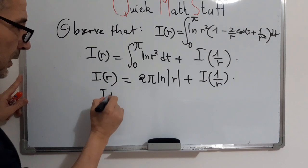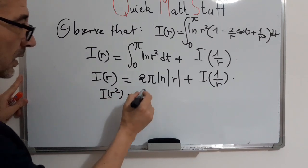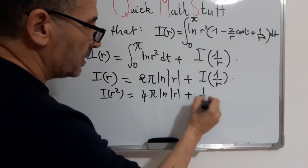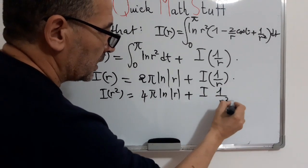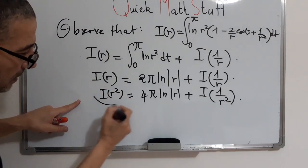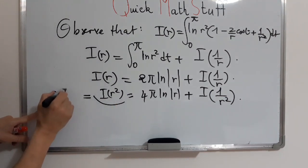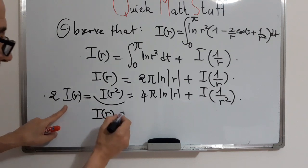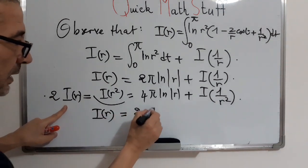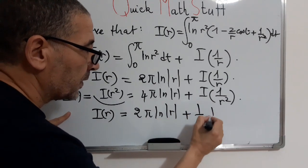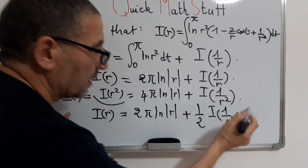We apply this relation to r squared. We have 4π ln of r plus I of 1 over r squared. But don't forget that this equals 2 times I of r. So in conclusion, we have that another form for I of r will be equal to π ln of r squared and plus 1 over 2 times I of 1 over r squared.